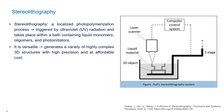Let us now study the first laser-based process — stereolithography. It is a very interesting and important technique. Stereolithography consists of localized photopolymerization using ultraviolet radiation, which is laser-based. This photopolymerization operation is carried out in a bath containing liquid monomers, oligomers, and photoinitiators. The surface of this bath is irradiated using UV laser radiation.